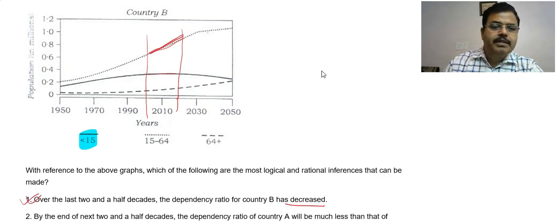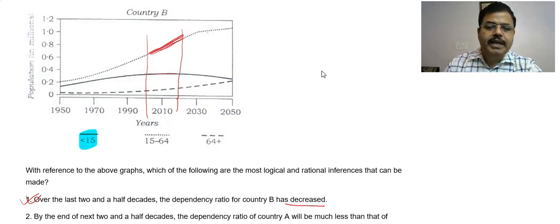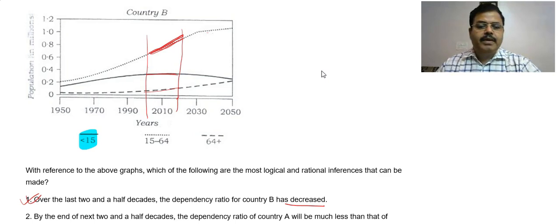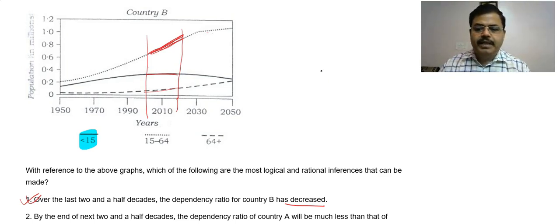So the first option is correct. Working people are going to increase sharply over the last two decades, although the number of dependents are not increasing as much. Therefore, dependency will decrease and the first option is very much correct.